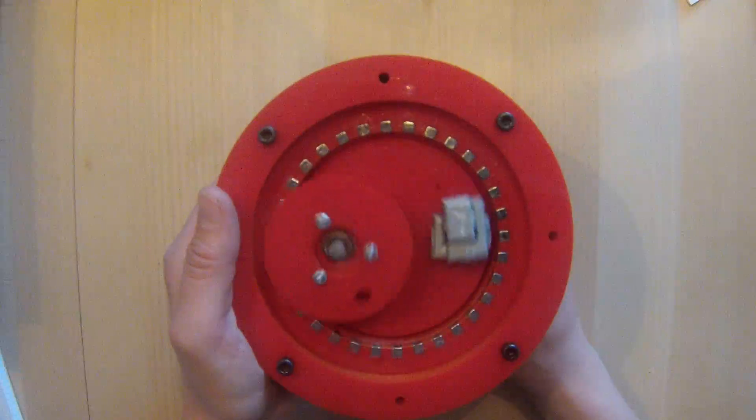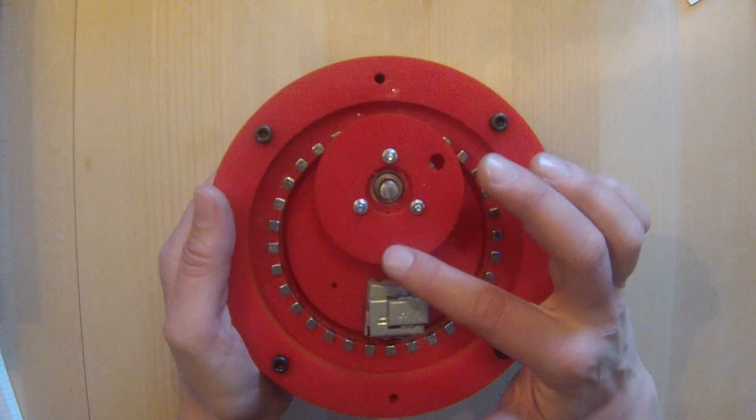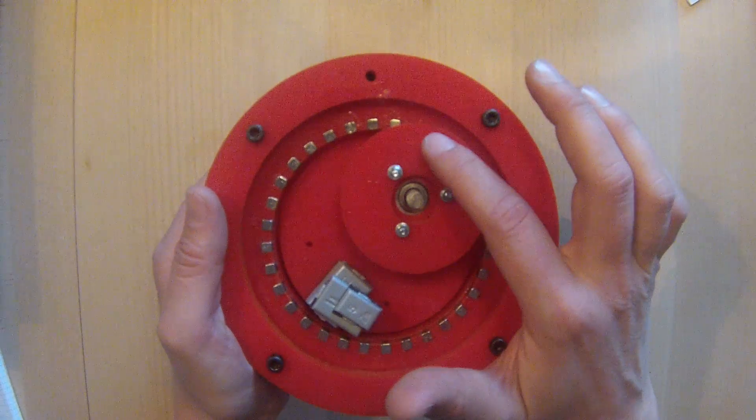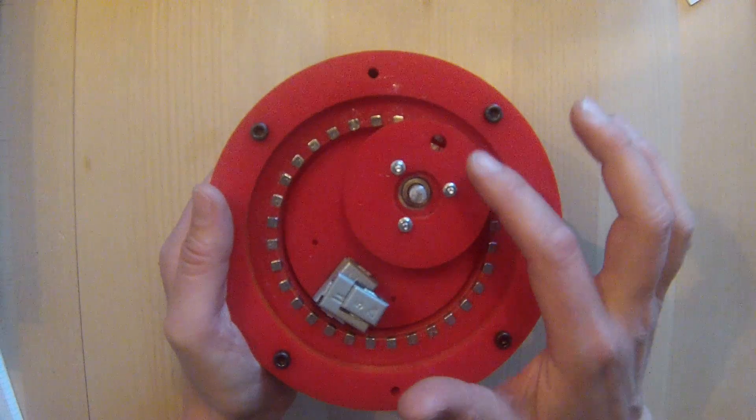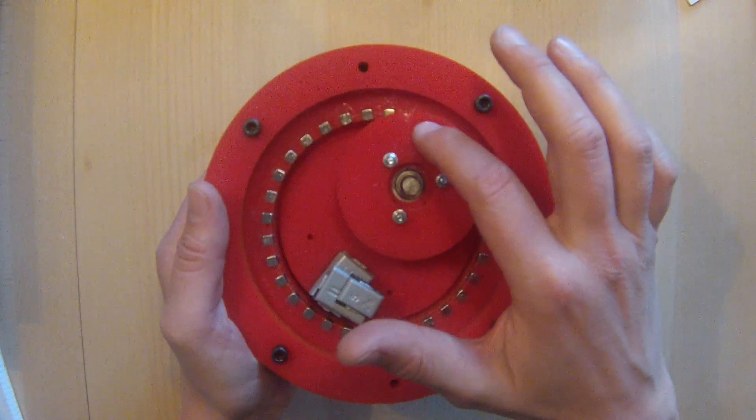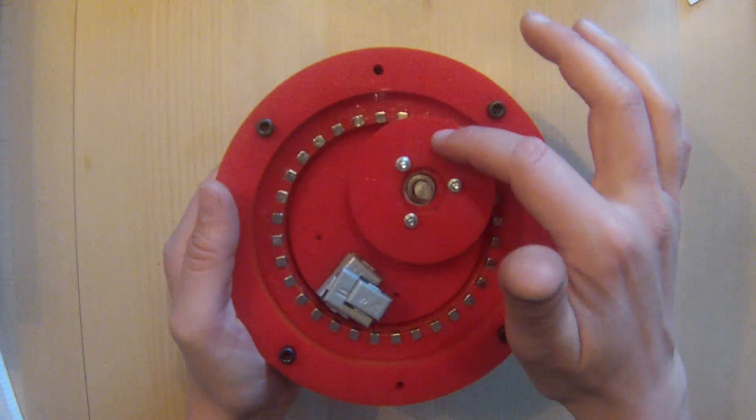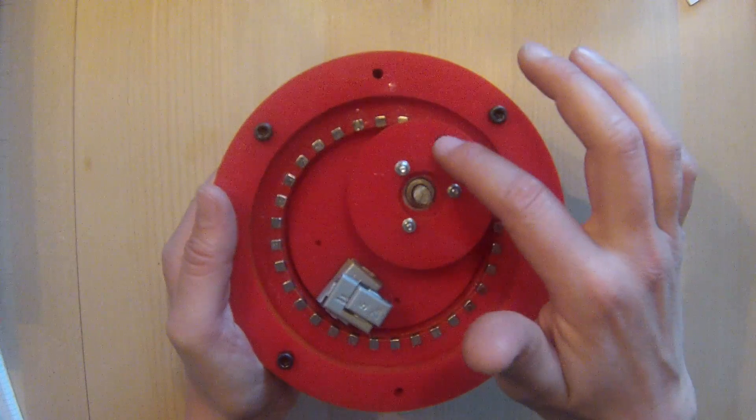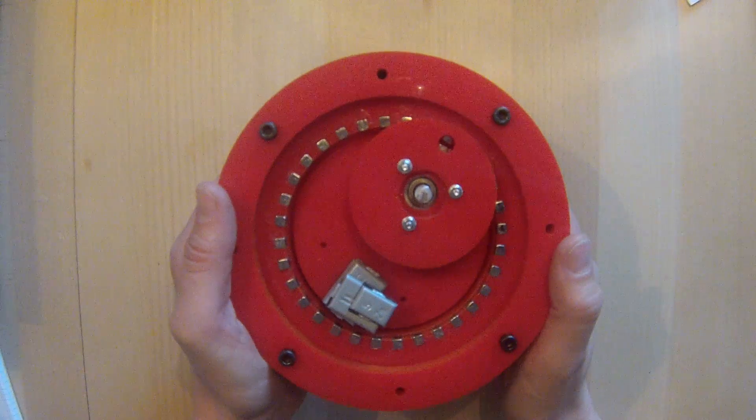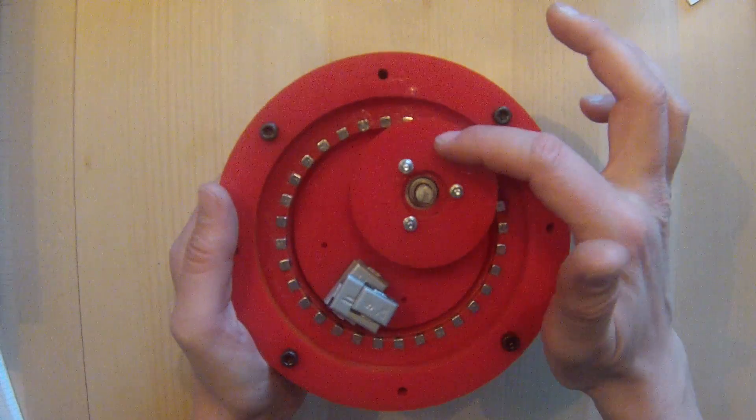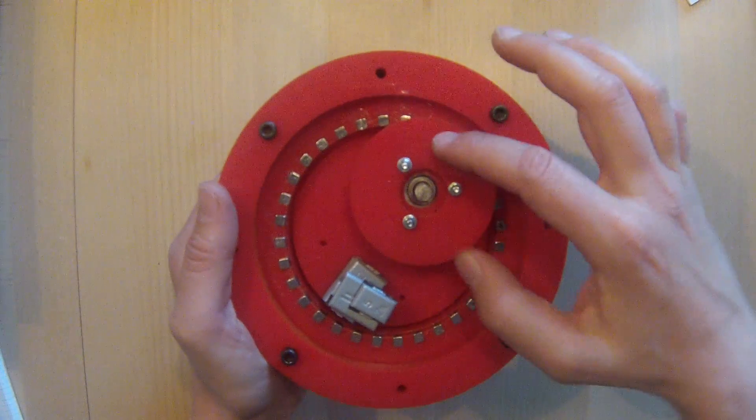One feature of a hypocycloid where the small circle is half the diameter of the large is that a point on the edge will form a straight line when you rotate. This hole here would be on the edge.